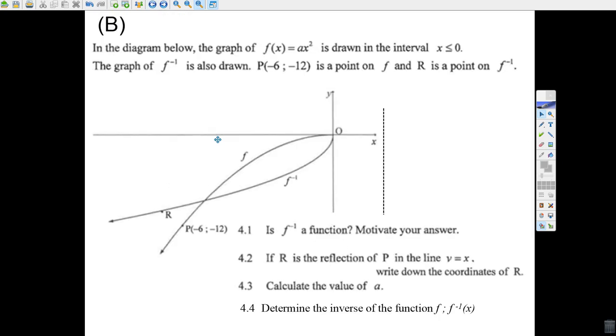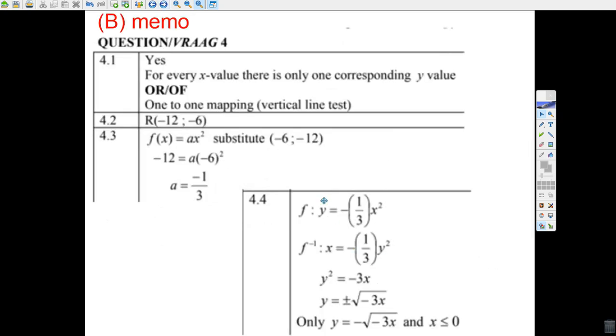That means your function is y equals minus 1 over 3 times x squared. The last question is determine the inverse function. Determine what the equation is for f inverse. If we're going to determine the inverse, first we get the function y equals minus 1 third x squared. Then we switch x and y.